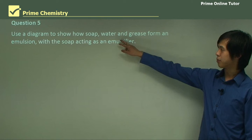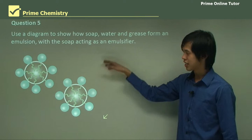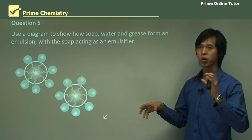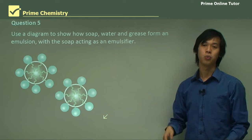Question: use a diagram to show how soap, water, and grease form an emulsion with soap acting as the emulsifier. With the oil droplet surrounded by water, the soap's negatively charged heads repel one another, keeping the oil droplets apart and allowing them to remain small. This prevents them from reforming large droplets and sitting on top of the water.